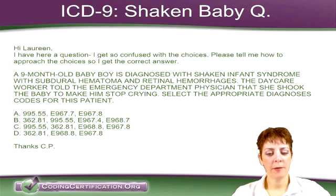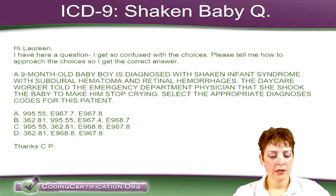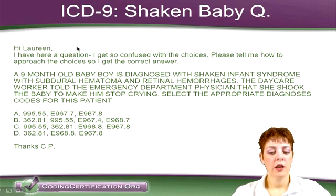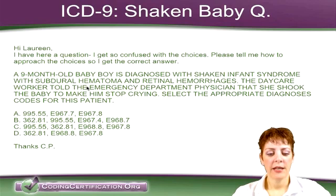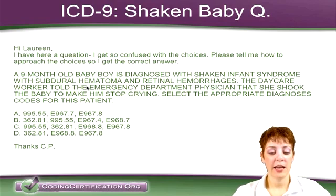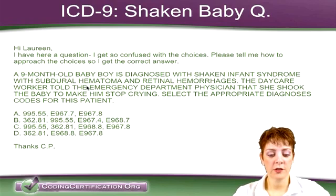We've got our first question here. It's an ICD-9 question about shaken baby syndrome. CP asks: I have here a question, I get so confused with the choices, please tell me how to approach the choices so I get the correct answer. A 9-month-old baby boy is diagnosed with shaken infant syndrome with subdural hematoma and retinal hemorrhages. The daycare worker told the emergency department physician that she shook the baby to make him stop crying. Select the appropriate diagnosis codes for this patient.